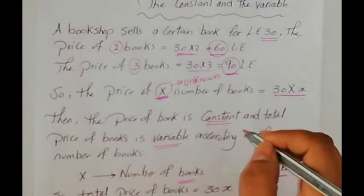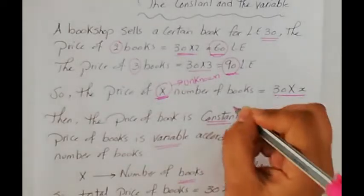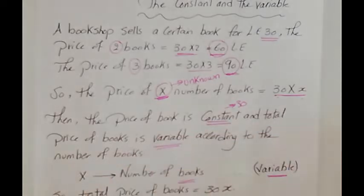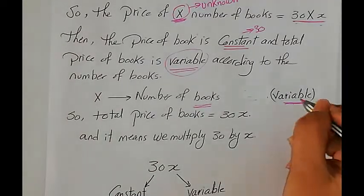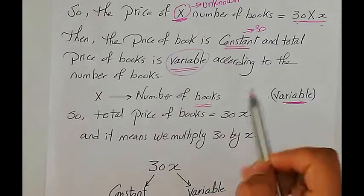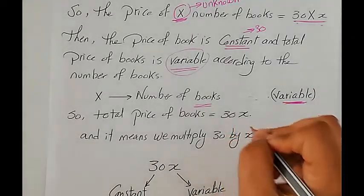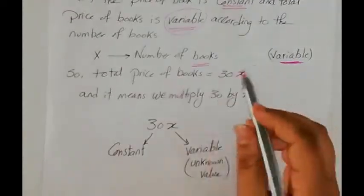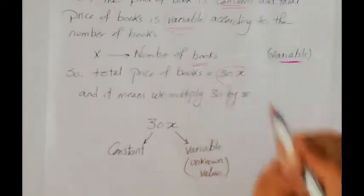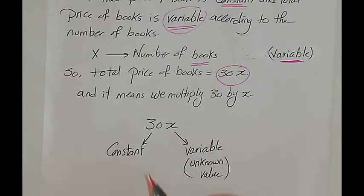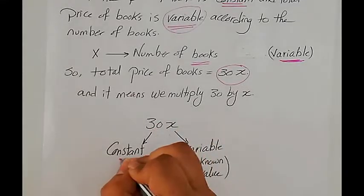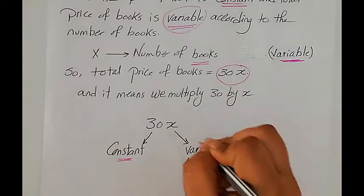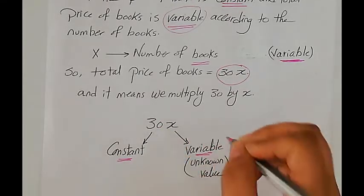The price of one book is a constant, which is 30. And the total price of books is a variable according to the number of books. So X is the number of books — it's a variable. The total price of books is 30 multiplied by X, written as 30X. Here, 30 is constant — the price of one book — and X is a variable, the unknown number of books.